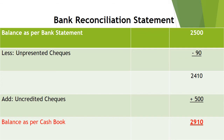The un-presented check of $90 was not deducted from the bank statement, so we deduct it: $2,500 − $90 = $2,410. Then we add the uncredited deposit of $500, because it was recorded in the cashbook but not yet added to the bank statement: $2,410 + $500 = $2,910. This gives us the cashbook balance.